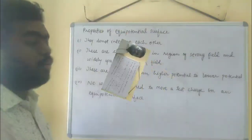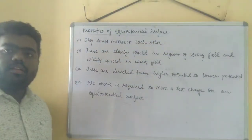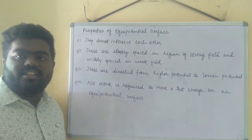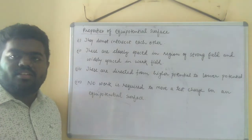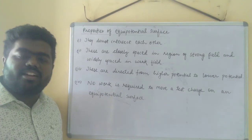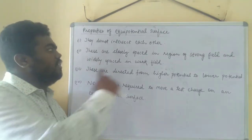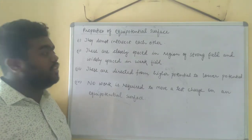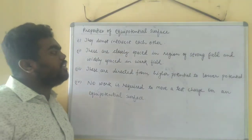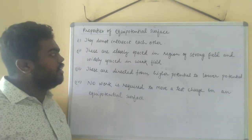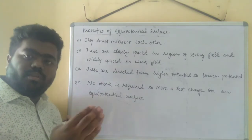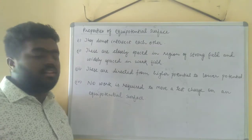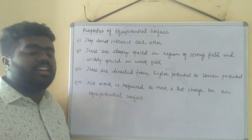Now let's study the properties of equipotential surfaces. First property: they do not intersect each other, just like electric field lines. If they did intersect, there would be two directions of the equipotential surface at that point, which is not possible. Second property: equipotential surfaces are closely spaced in regions of strong electric field and widely spaced in regions of weak electric field.